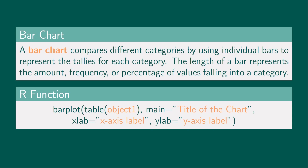A bar chart compares different categories by using individual bars to represent the tallied values for each category. The length of a bar represents the amount, frequency, or percentage of values falling into a category. The code below allows us to generate a bar chart in RStudio. Object1 represents the column that contains the data of your variable. You can set the title of the graph by replacing 'title of the chart'. xlab allows us to set the label for the x-axis and ylab is for the y-axis.